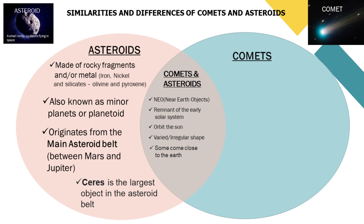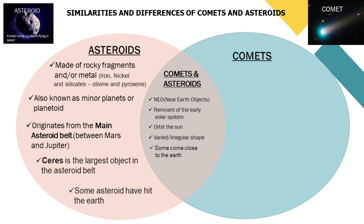Some asteroids have hit the earth. In 1980, the discovery of high contents of iridium in oceanic sedimentary layers in different parts of the world — such as Italy, Denmark, and New Zealand — led Luis and Walter Alvarez to propose the Alvarez hypothesis. They proposed that 65 million years ago, an approximately 10-kilometer-diameter asteroid made impact with earth, causing a mass extinction of plants and animals, including dinosaurs.